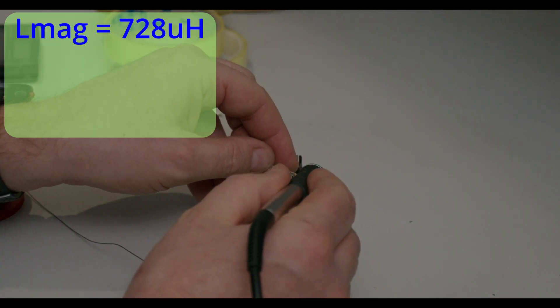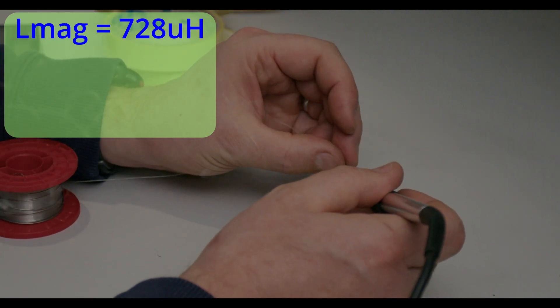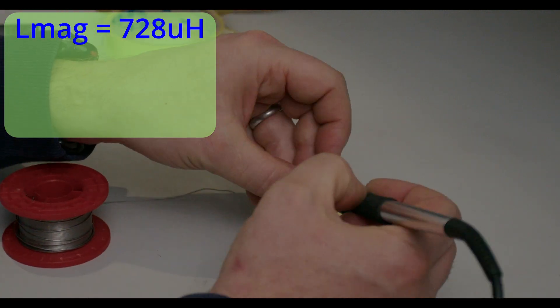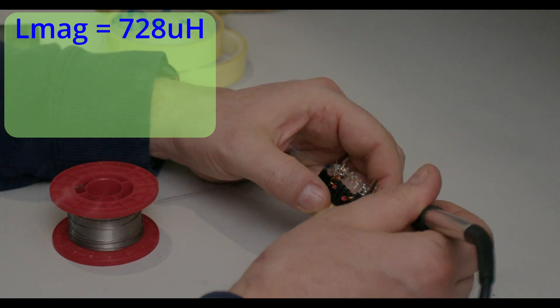However it's also useful to measure the primary reference leakage inductance, and we can do this by measuring the inductance of the primary with all other windings short circuited. To short circuit the secondary and bias windings I use a couple of old pieces of solder braid to bond the pins together.